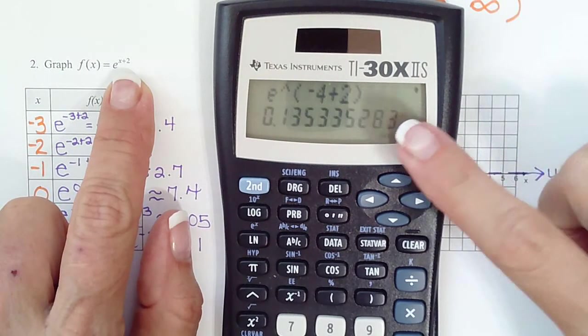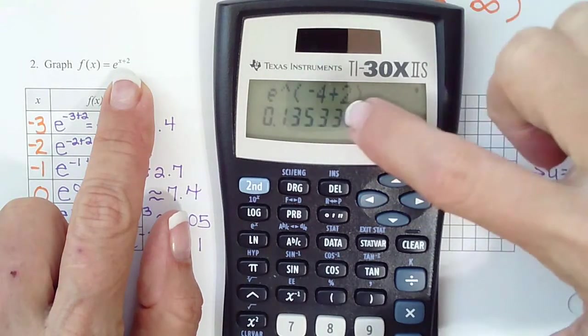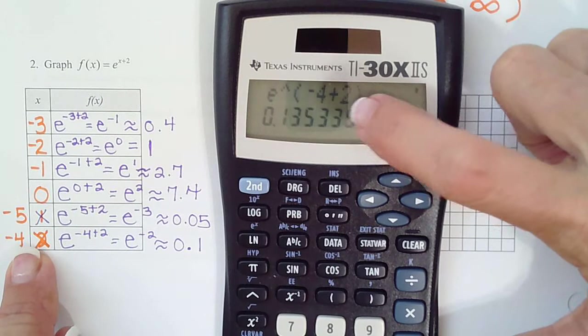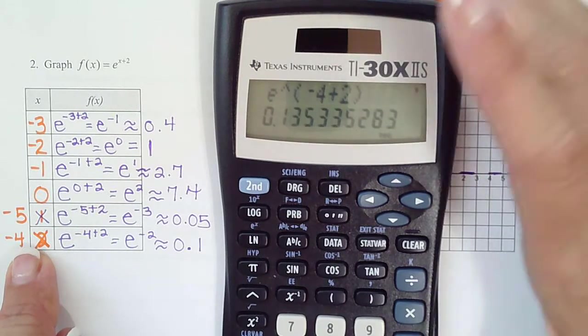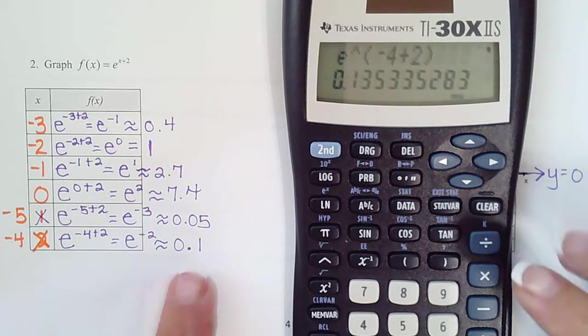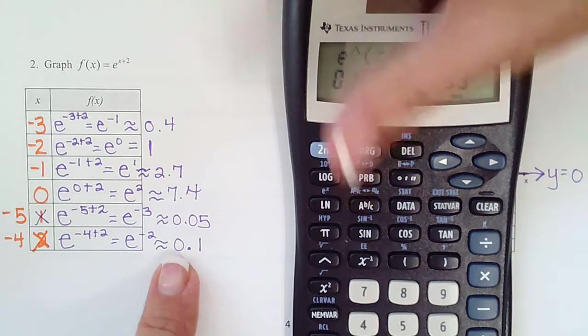I reminded you that everything in the exponent needs to be in parentheses. Notice on this one it was negative 4 plus 2 all in parentheses because it's all part of the exponent. You see we get the same answer as we did up above.